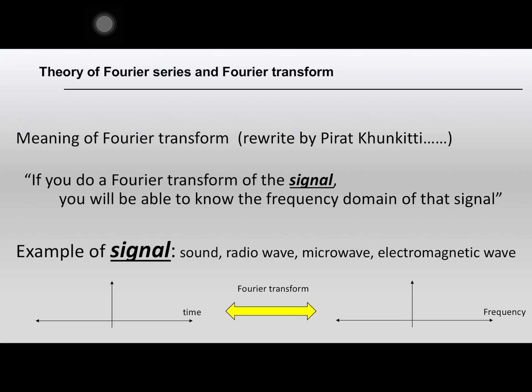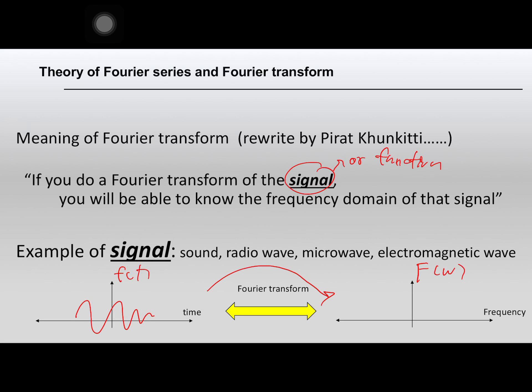The easy way to explain the meaning of Fourier transform is that if you do the Fourier transform of a signal or function, you will be able to know the frequency domain of the signal. For example, if you have a signal in the time domain, and you do the Fourier transform of the signal, you will get F(ω) in the frequency domain.